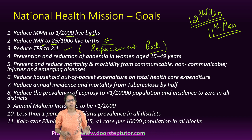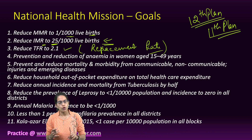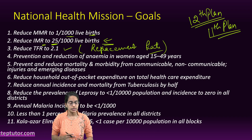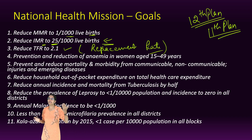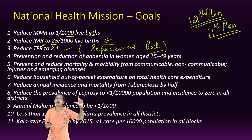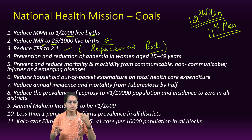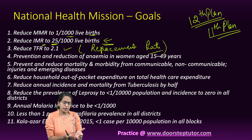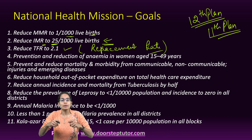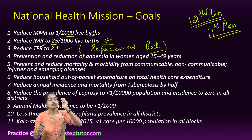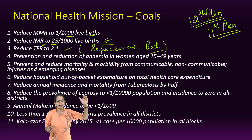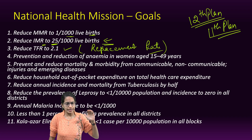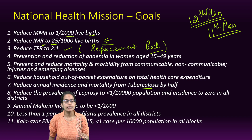Additional goals included reducing morbidity and mortality from non-communicable, communicable, and emerging diseases. Out-of-pocket expenditure — the expense not covered by insurance that individuals pay upfront — should be significantly reduced so it does not become a financial burden for families. The mission also targeted reducing deaths and mortality from tuberculosis by half.